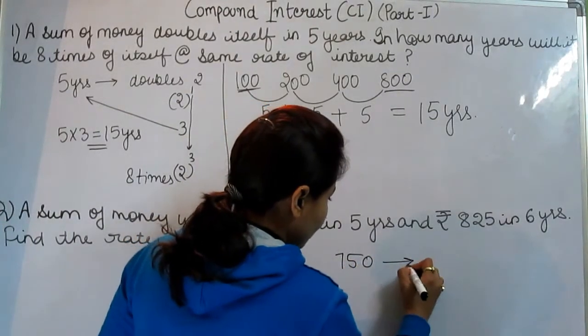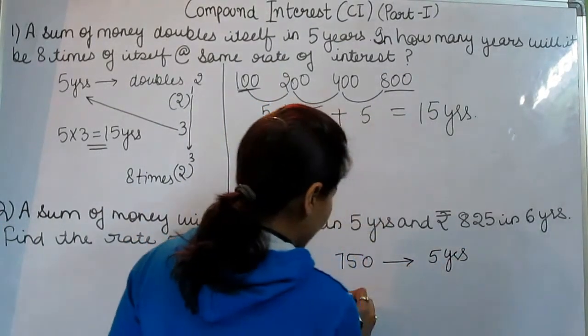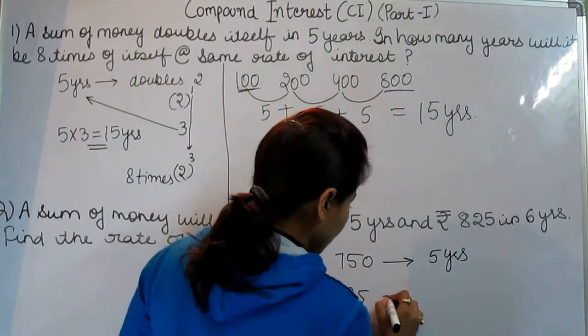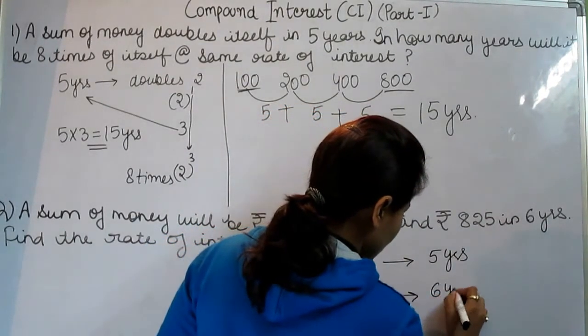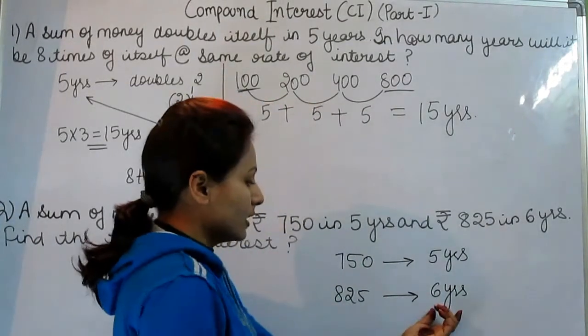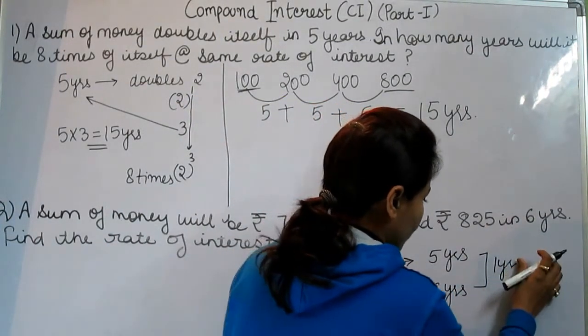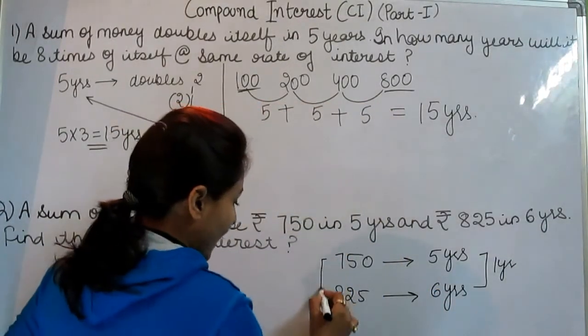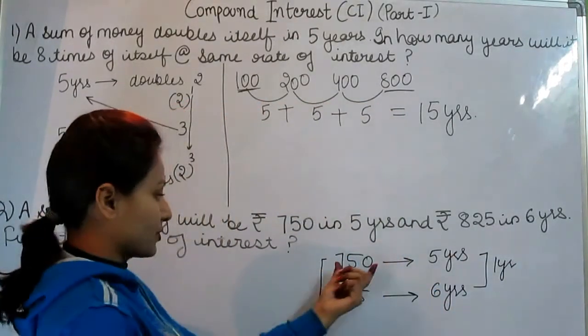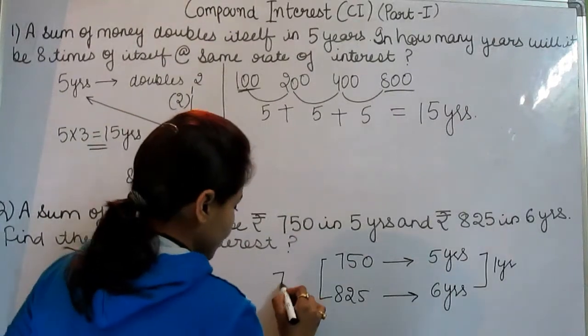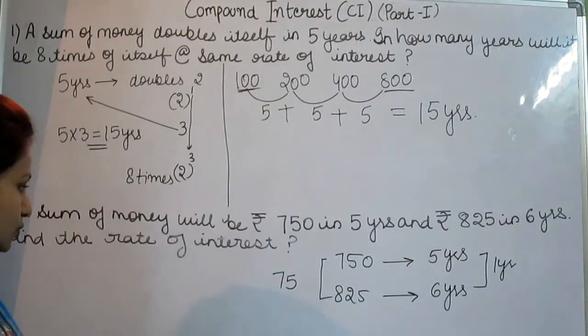So the procedure is the same. ₹750 in 5 years and ₹825 in 6 years. Most probably you will be given the gap of 1 year.